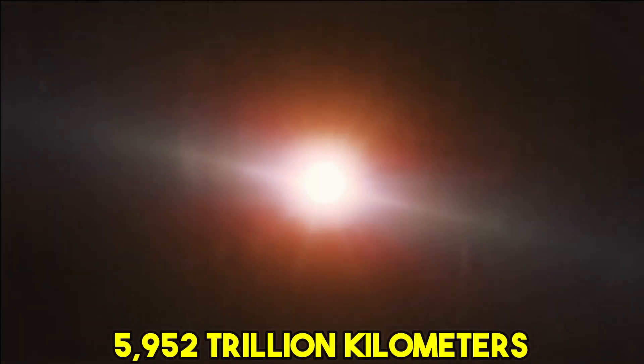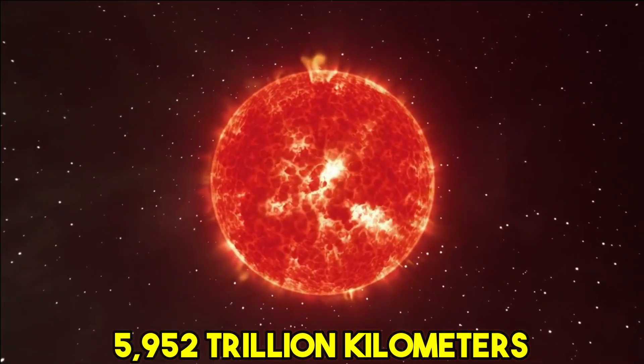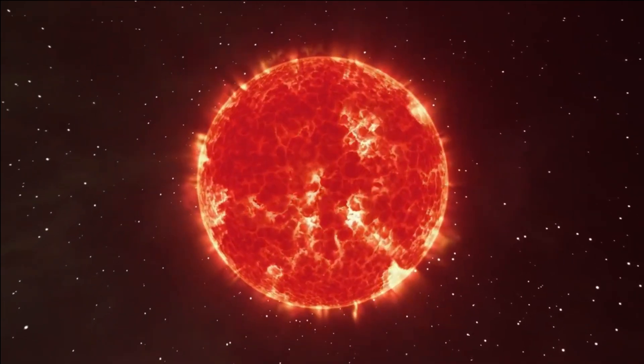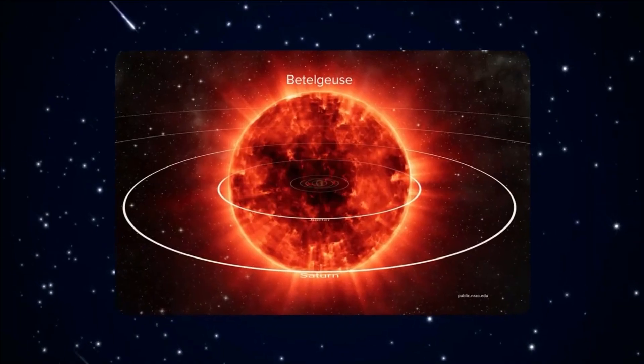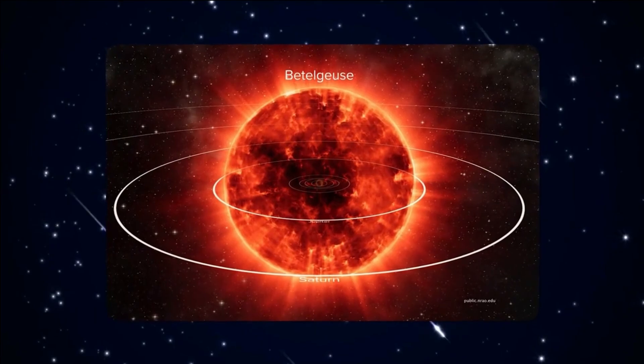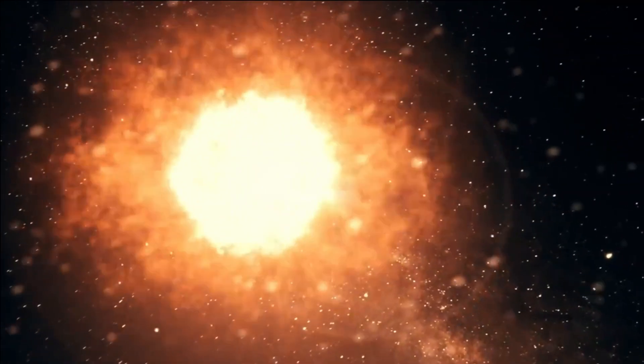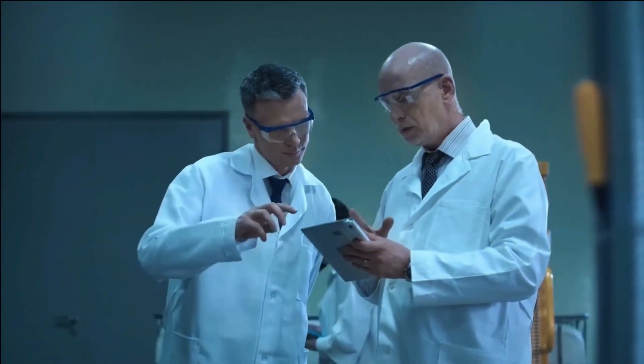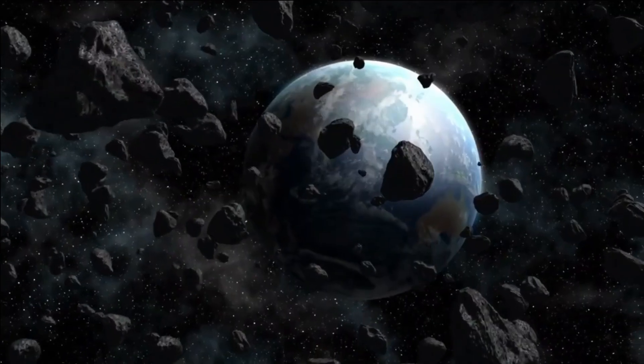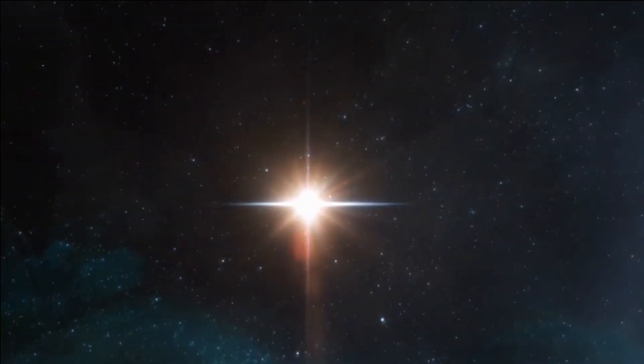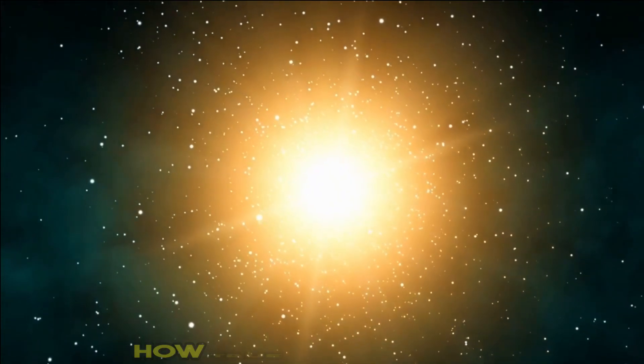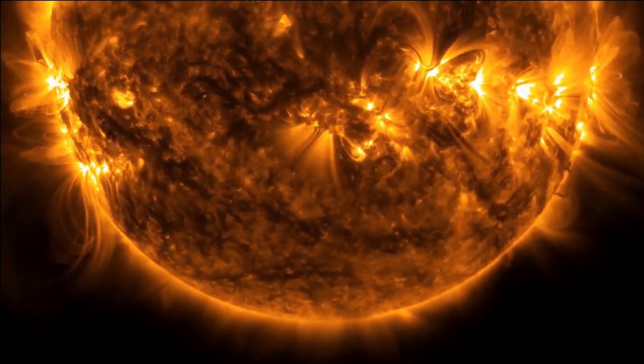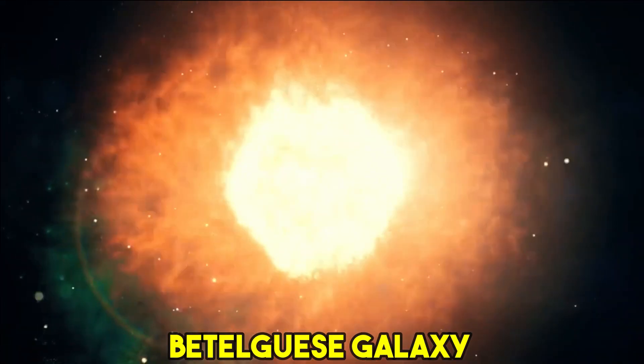Some 5,952 trillion kilometers away in the constellation of Orion lies Betelgeuse, a red supergiant that could explode any moment from now. This brewing danger has captured the attention of the highest-ranked NASA officials who fear that our home planet might be caught in the crossfire of this impending explosion. Join us in today's video as we reveal NASA's chief warning about the imminent explosion of the Betelgeuse galaxy.